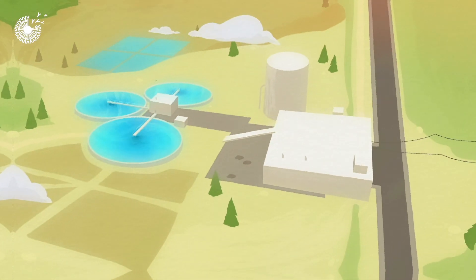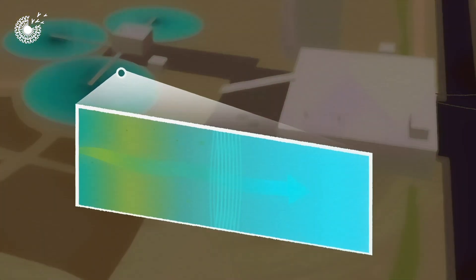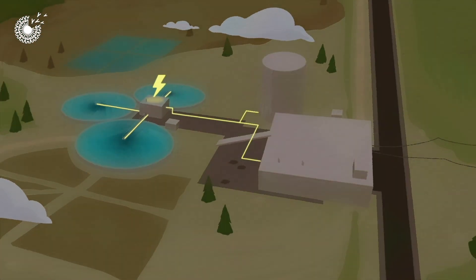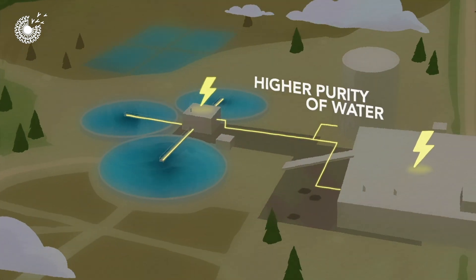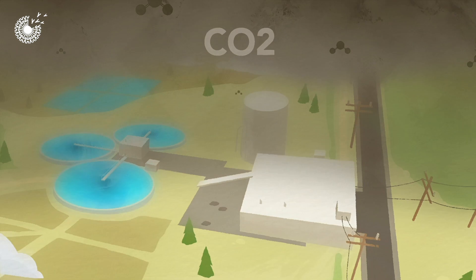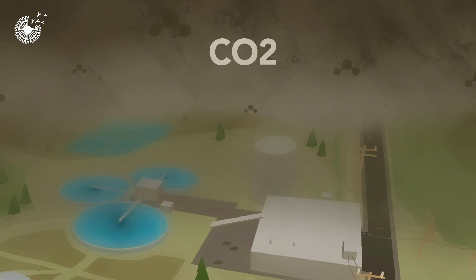And although we have powerful water purification systems, forcing millions of gallons of water through the membrane of a filter takes a lot of energy. So if we want a higher purity of water, we must use a higher energy input, therefore pumping more CO2 into the atmosphere and creating a much greater cost for clean water.